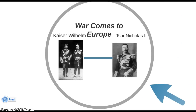Moving along, we see that war comes to Europe during the summer of 1914. You can see several key figures here: Kaiser Wilhelm and one of his close associates in full military uniform — note the German pickelhaube, that helmet with a spike on top — and on the right-hand side, Czar Nicholas of Russia. In fact, they were actually cousins, which was not uncommon among ruling monarchs and emperors.